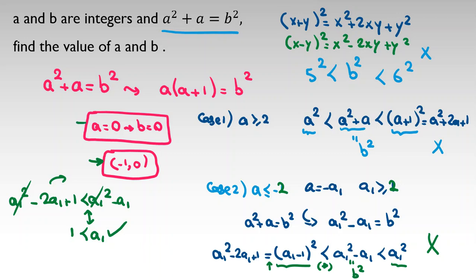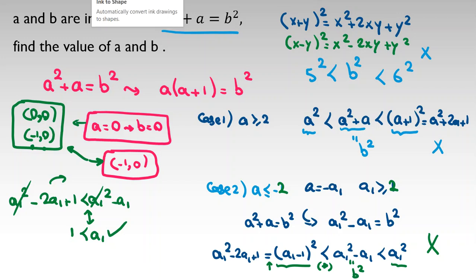So we have found exactly two answers: a=0, b=0 and a=-1, b=0. These are our only solutions. Thanks for watching this video. Please don't forget to subscribe, turn on the bell, and like the video. Have a good day!